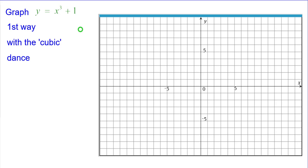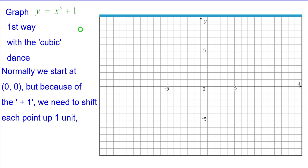The first way is we're going to use what I call the cubic dance. And normally we start at the origin, but because of the plus 1, we need to shift each point up one unit, so we will start at the point 0, 1.